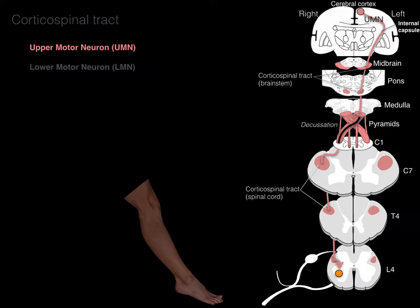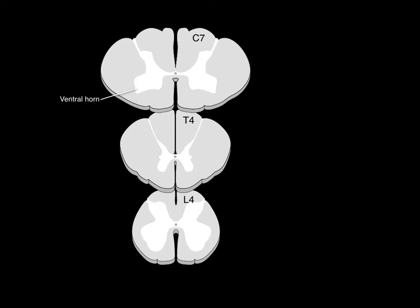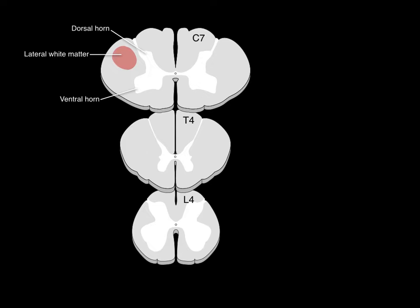Here we have the corticospinal tract in the spinal cord. We see the ventral horn gray matter and the dorsal horn gray matter. To identify where the corticospinal tract is located in sections of the spinal cord: it's lateral in the white matter, close to the dorsal horn. Dorsal horn, lateral white matter — there is the corticospinal tract. This is the same on both sides.